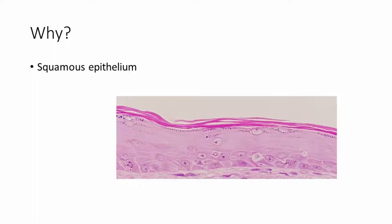The picture shows the squamous epithelial lining of the skin. It has multiple layers of cells, with the uppermost layer showing keratinization — it is the most pinkish layer on the top.